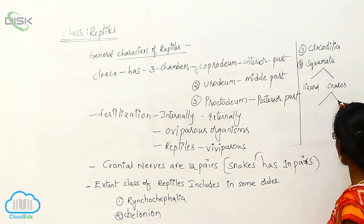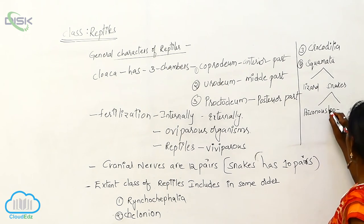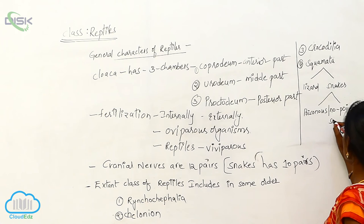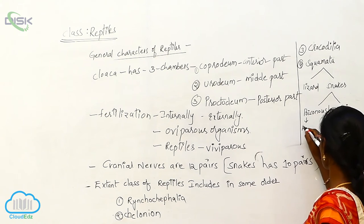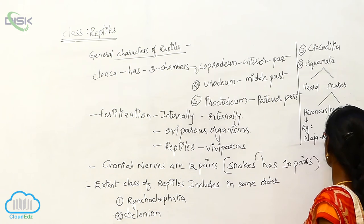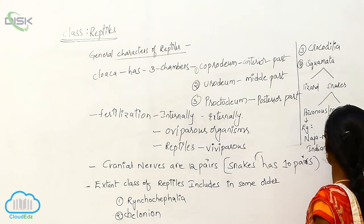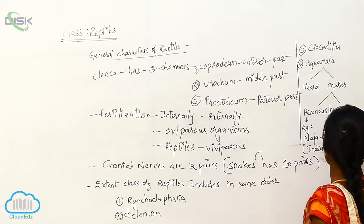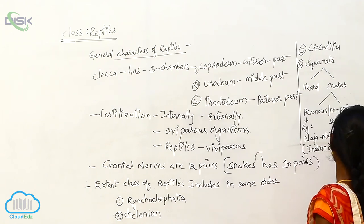Snakes divide into poisonous and non-poisonous. An example of a poisonous snake is Naja, that is the Indian cobra. An example of a non-poisonous snake is Ptyas, that is the rat snake.